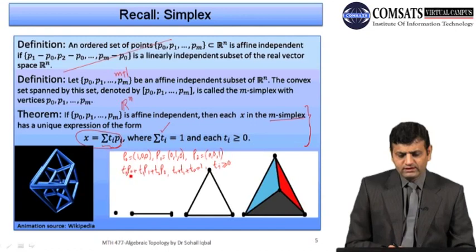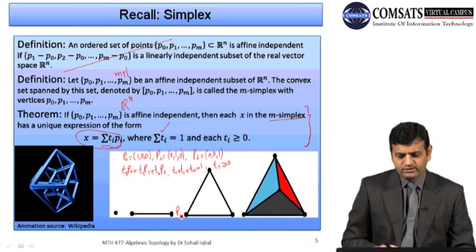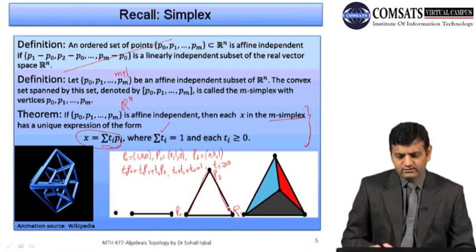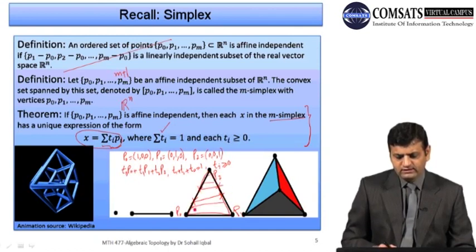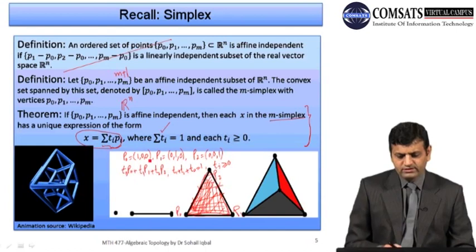With these conditions on the t_i's, the set of all such combinations is a convex set — it is the set of all line segments joining p_0, p_1, p_2, and the interior points. If we ignore the conditions and let t_i be arbitrary real numbers, the combination t_0·p_0 + t_1·p_1 + t_2·p_2 generates the whole ℝ^3. But imposing the conditions gives just the triangle, which is the two-simplex generated by these three points.